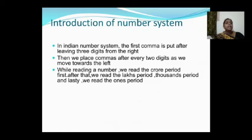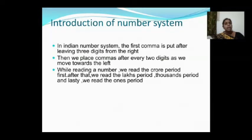While reading a number, we read the crore period first, then the lakhs period, then the thousands period, and lastly the ones period. When reading and writing a number, start from the largest period — the crore period. But when applying commas, start from the ones period.